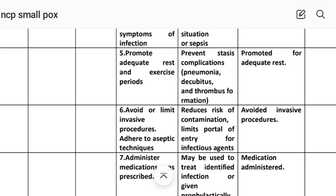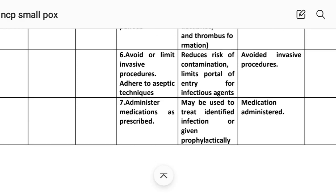Intervention number five: promote adequate rest and exercise periods. Rational: prevents stress complications such as pneumonia, decubitis and thrombosis formation. Implementation: adequate rest promoted. Intervention number six: avoid or limit invasive procedures, adhering to aseptic technique. Rational: reduces risk of contamination and limits portals of entry for infectious agents. Implementation: invasive procedures avoided.